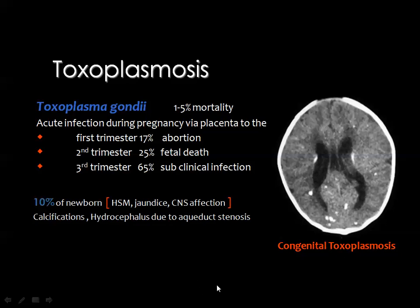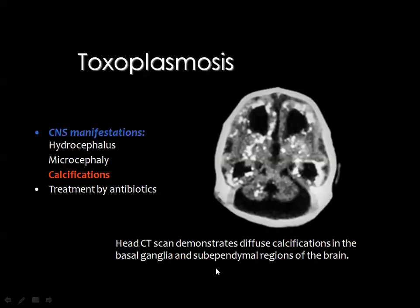On CT scan, you will see calcium distributed around the ventricles, and you may also see hydrocephalus commonly due to aqueductal stenosis. This CT scan of a toxoplasma infection case shows extensive periventricular calcification, calcium in the basal ganglia, and calcium around the ventricles. The skull is relatively small, and there is a Dandy-Walker malformation in the posterior fossa — a large retrocerebellar CSF-containing cyst communicating with the fourth ventricle through the absent vermis. Toxoplasmosis is treated by antibiotics.